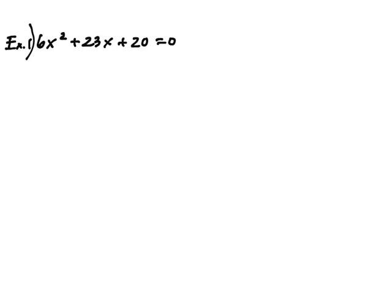When we look at the variables, no common factors. 6, 23, and 20 do not have a common factor. So what am I going to do? I'm going to create my table.